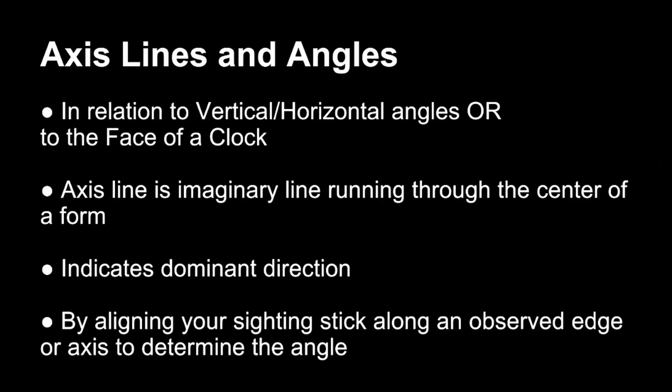In this lecture, we're going to talk about axis lines and angles. I'm going to go over the face of a clock method for getting relative angles. We're going to talk about axis lines that run through the center of forms, how we can use those to make things feel more symmetrical, and how they're important to indicate dominant directions of objects. We're also going to talk about using our sighting stick to get different angles, figure out different axes, and draw ellipses.